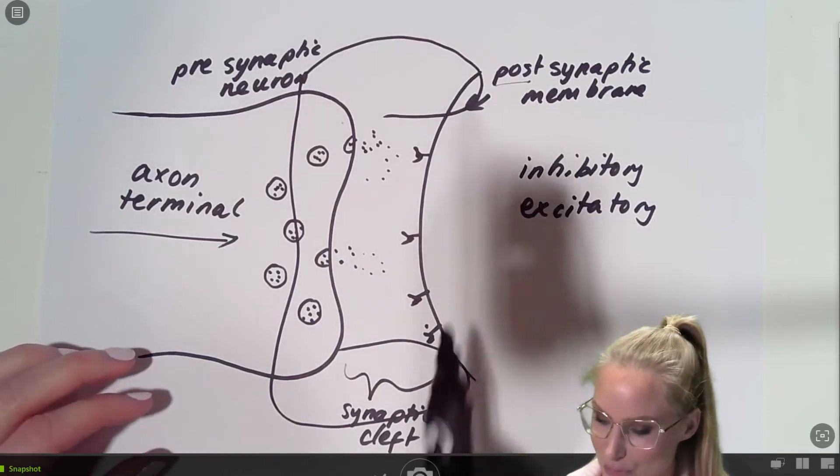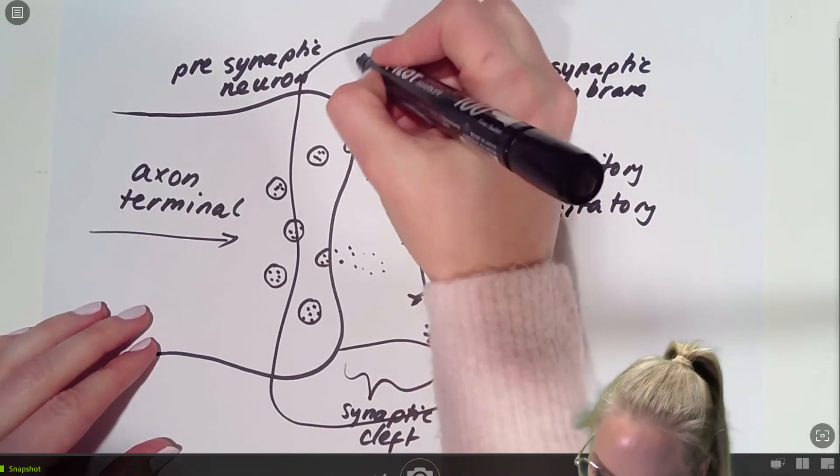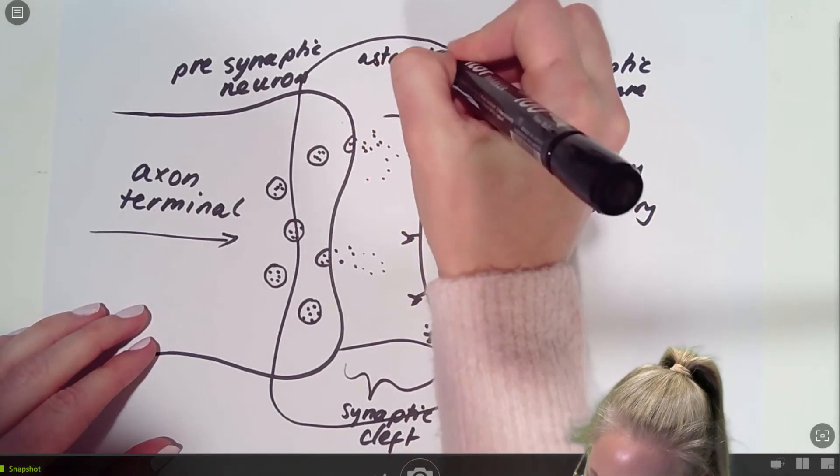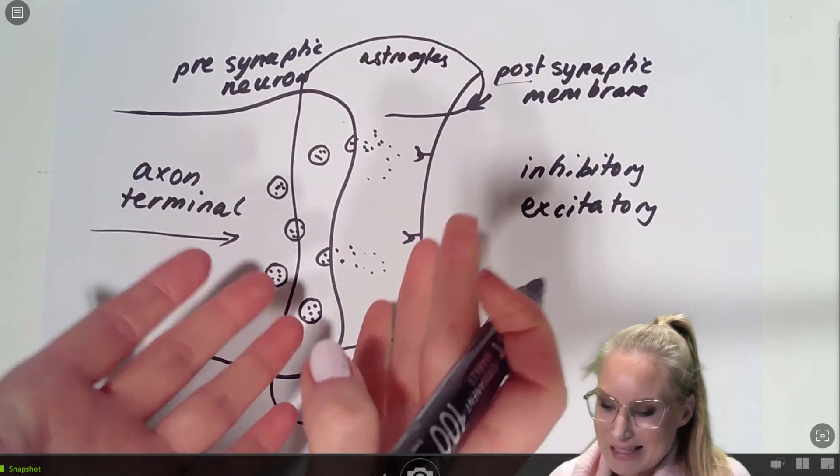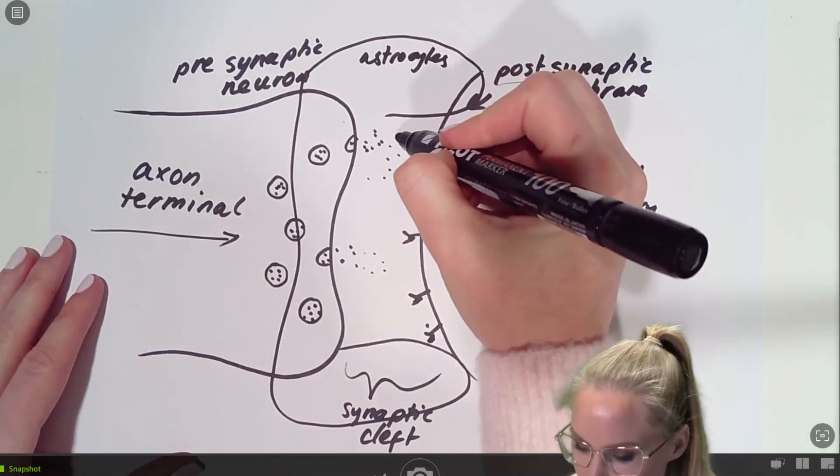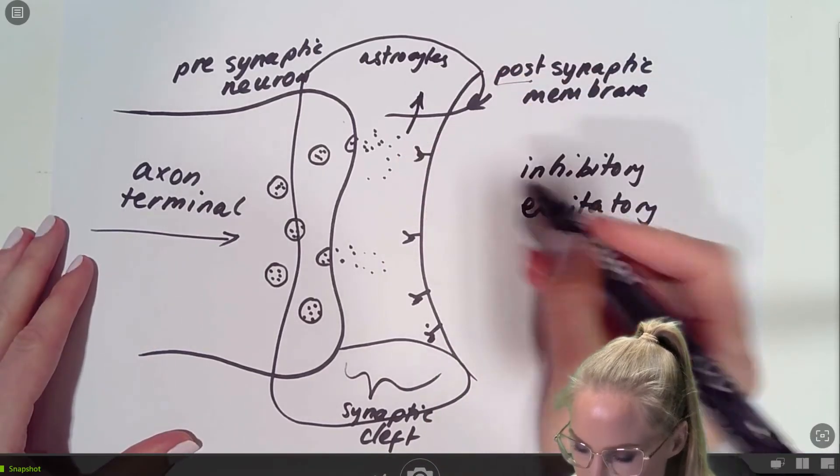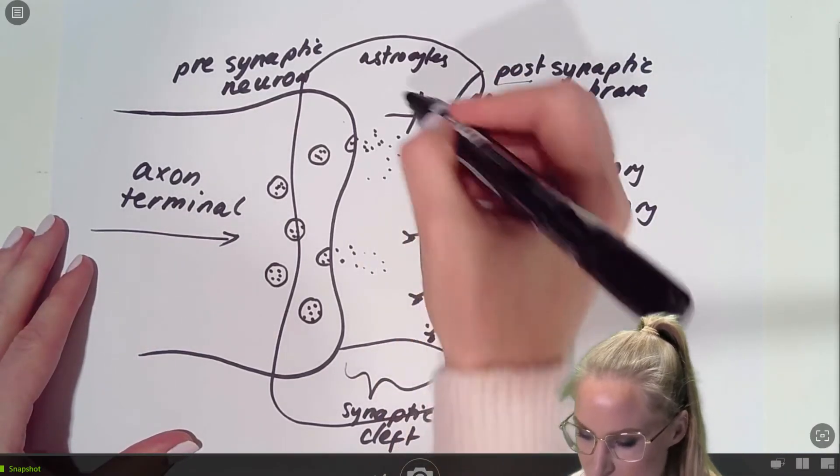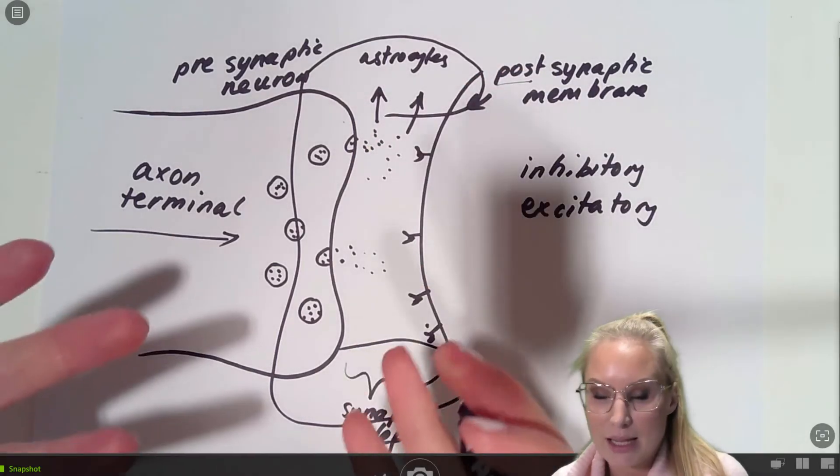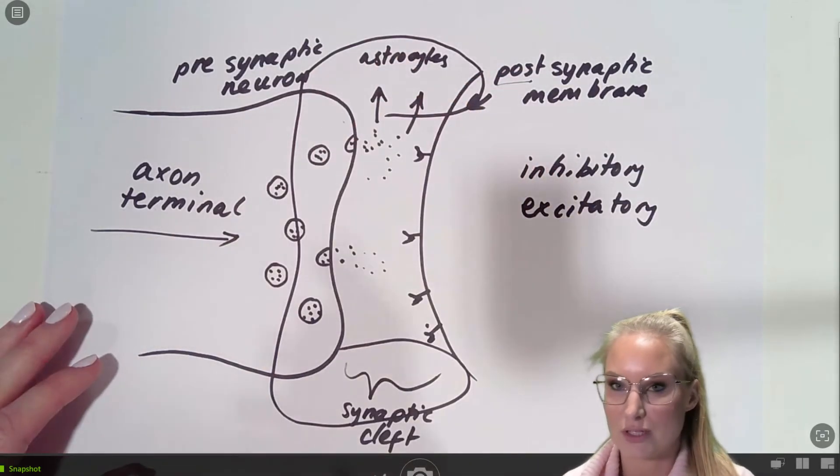Well, let me tell you. So these astrocytes are mopping up excess neurotransmitter. So what they're doing is, you know, the signal has been sent, the neurotransmitter has bound to its receptors, and then the excess stuff is being taken up actively by these astrocytes.